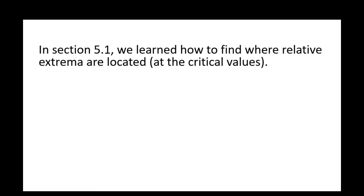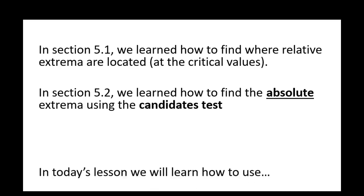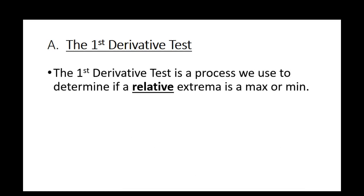In section 5.1, we learned how to find where the relative extrema are located — they're located at the critical values, where f prime is zero or undefined. But what we never really did was determine whether it's a relative max or a relative min. Some of you might be thinking of the candidates test from 5.2, but that tells you about absolute maxes or mins, not relative ones. Today's lesson — the first derivative test — helps you determine not just where the relative extrema are, but whether it's a relative max, a relative min, or maybe neither.